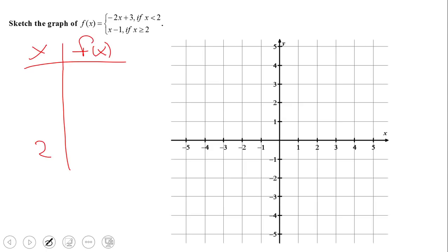And when x equals 2, we're going to use this part of the piecewise function and we're going to have f of 2 equal 2 minus 1 which is 1. So basically that's the first point I'm going to plot. 2 and 1.